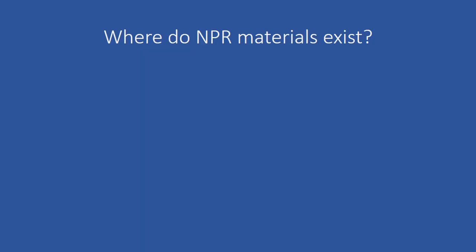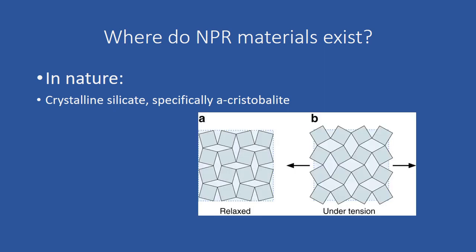Where do NPR materials exist? They occur rarely in nature and are more often man-made. They are naturally occurring in crystalline silicate, specifically cristobalite, in zeolite, as well as in some skin and other soft tissues.